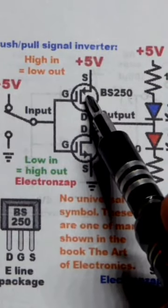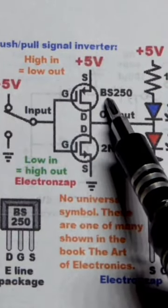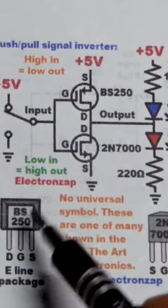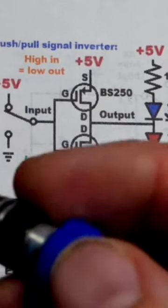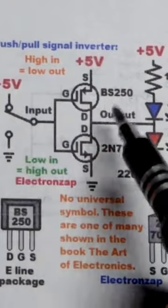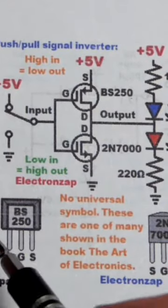The way that this works: first off we have the p-channel enhancement mode MOSFET right here, the BS 250. It's in the e-line package. The front of both of them are facing the LEDs because you can see that their drains and sources are on opposite sides.